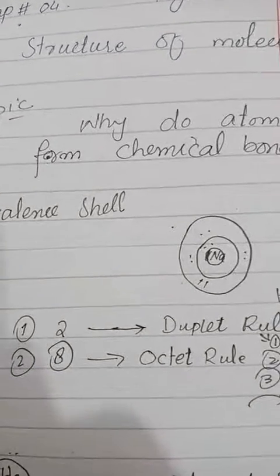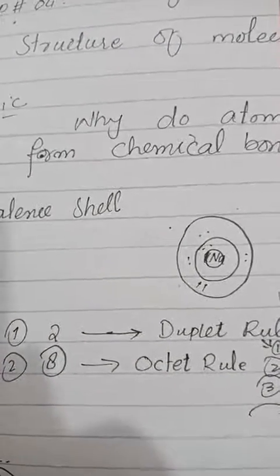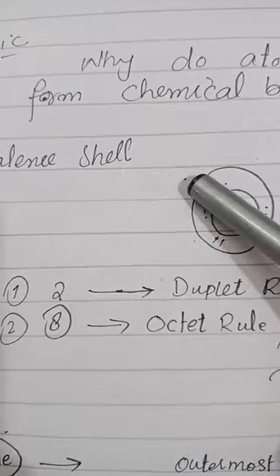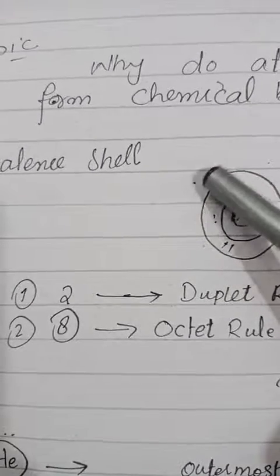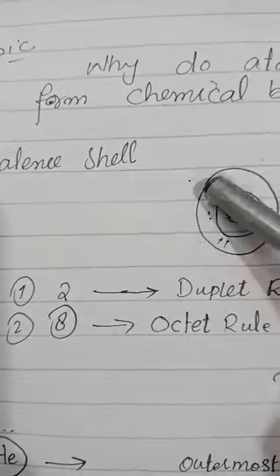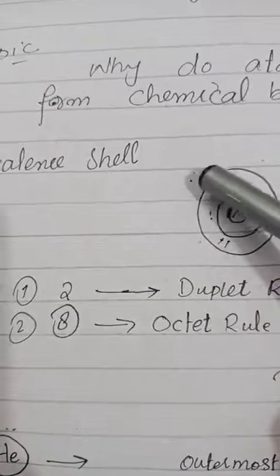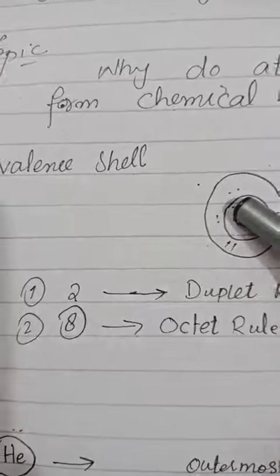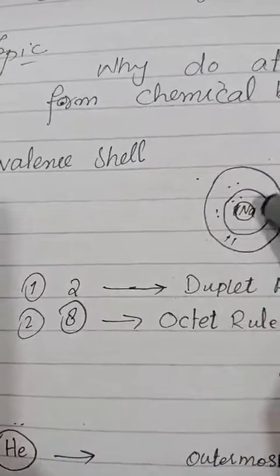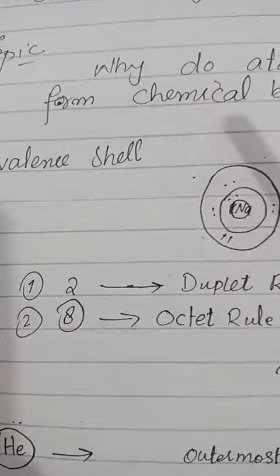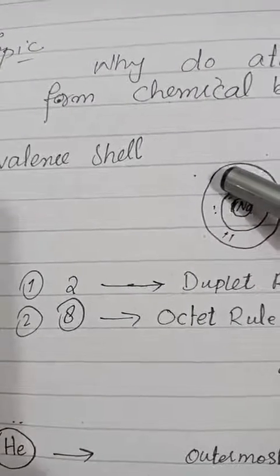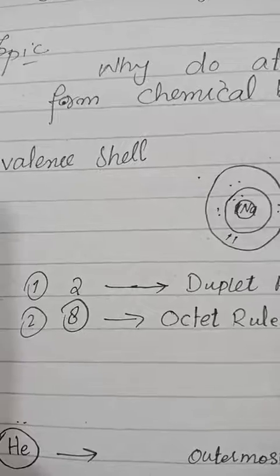We can take the example of sodium. Sodium has one electron present in its outer shell. If this one electron is donated to another atom which needs seven electrons, each will fulfill the other's deficiency and both will become stable. The bond formed between them through mutual sharing is called a covalent bond.